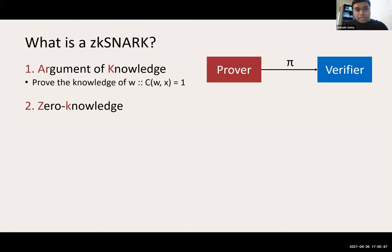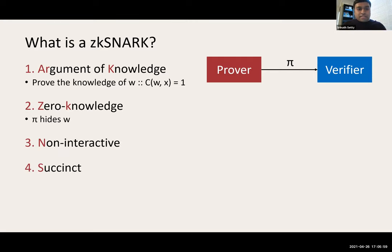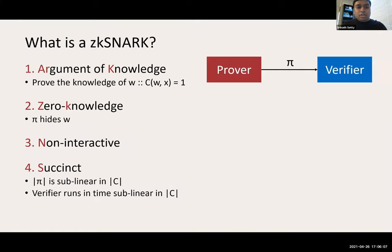It's zero knowledge, meaning the proof hides the secret witness — it does not reveal anything about the witness beyond what's implied by the statement. It's non-interactive. Finally, it's succinct: the proof size is sublinear in the size of the circuit, and the verifier also runs in time sublinear in the circuit size.